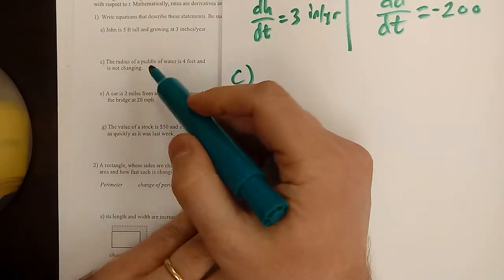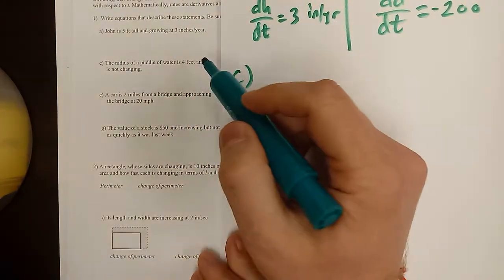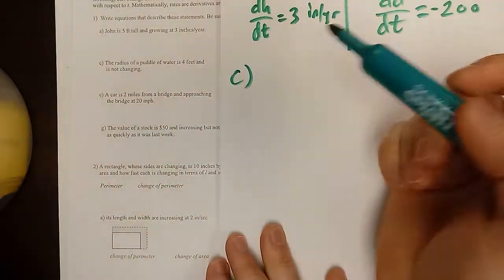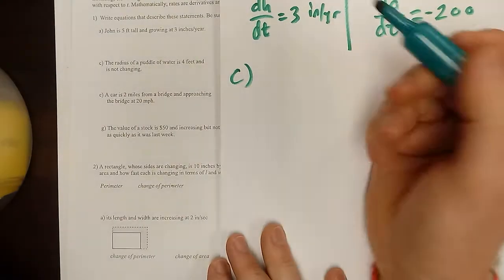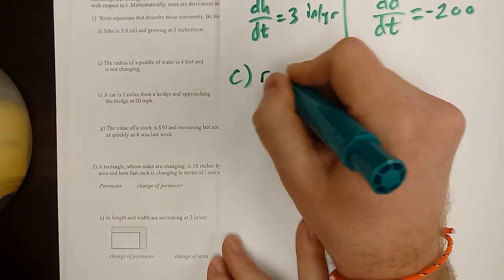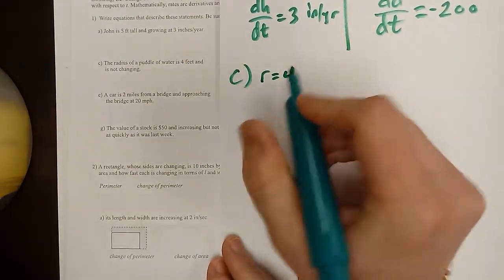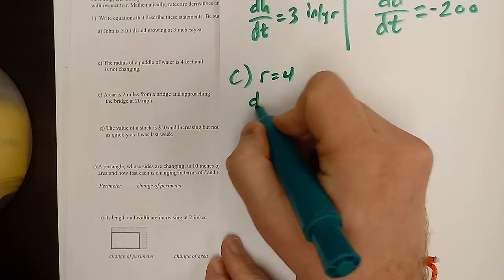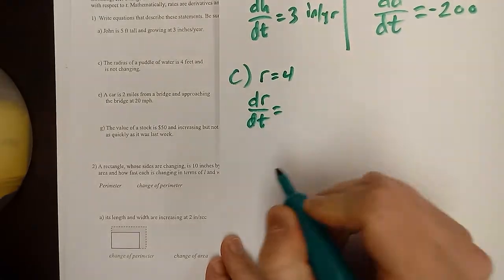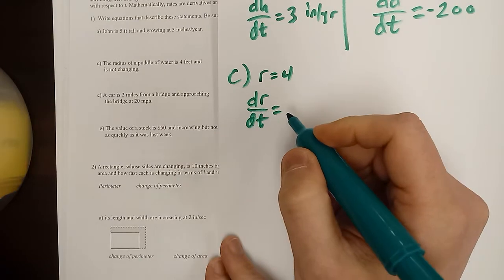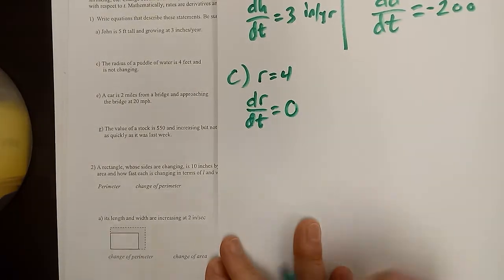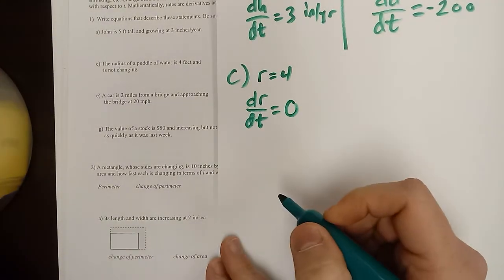Part C says the radius of a puddle of water is four feet and is not changing. So you might think there's only one equation: R = 4. But there's actually another one — the change in the radius is not changing. There's a number for that: zero. So dR/dT = 0.